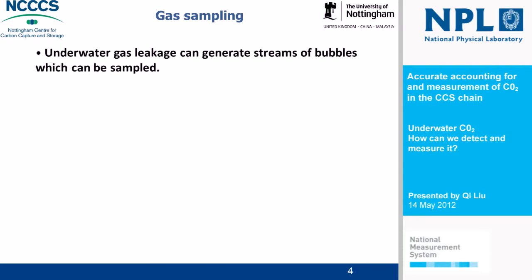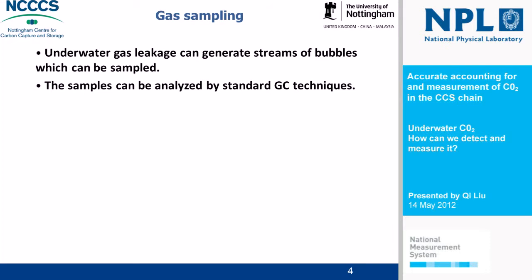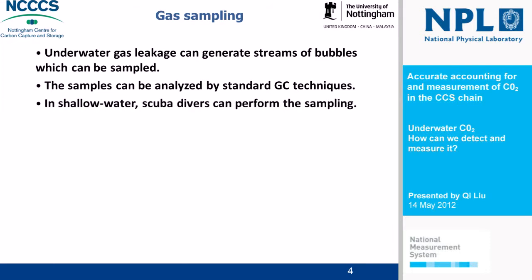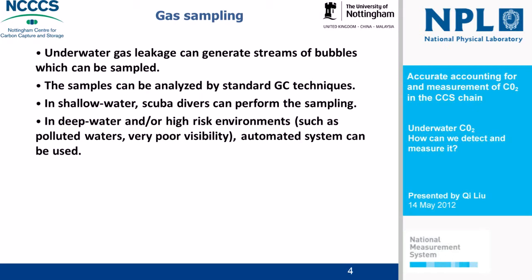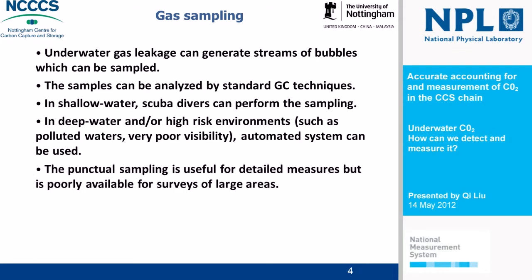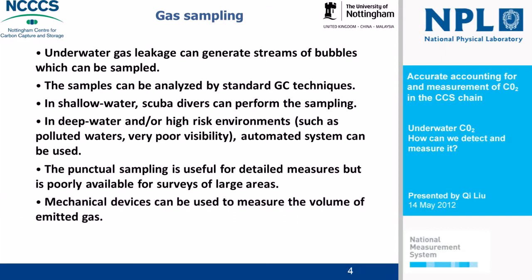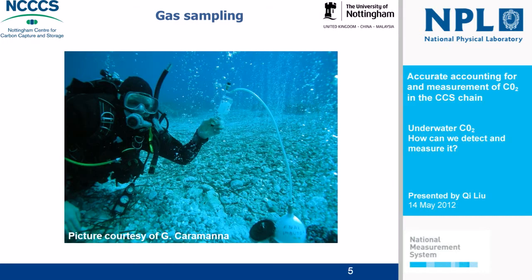For gas sampling, underwater gas leakage can generate a stream of bubbles which can be sampled and analyzed by standard GC technique. In shallow water, a SCUBA diver can perform the sampling, but in deep water or high-risk environments such as polluted or very low-visibility water, an automatic system can be used. Punctual sampling is useful for detailed measurements, but may not be practical for surveying large areas. A mechanical device can be used to measure the volume of emitted gas. This picture shows my colleagues doing free gas sampling in shallow water near Panaria Island, Italy.